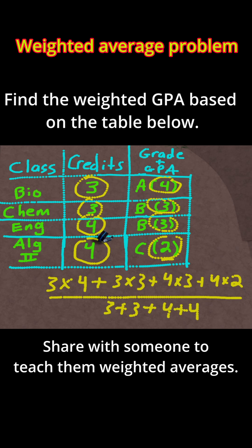Now we just need to compute this expression. 3 plus 3 plus 4 plus 4, if you do all that, equals 14.